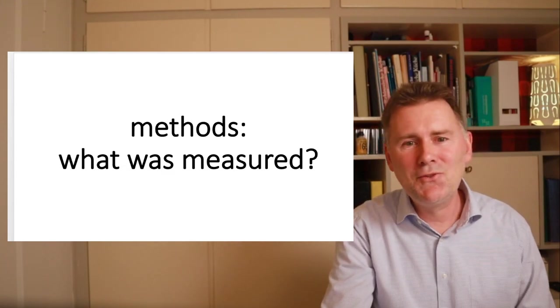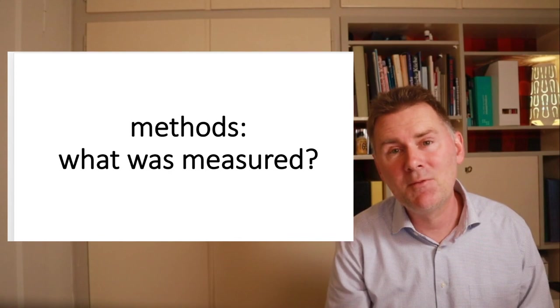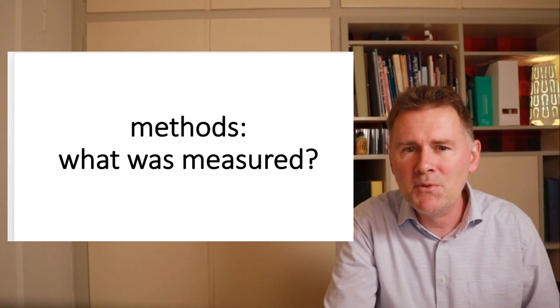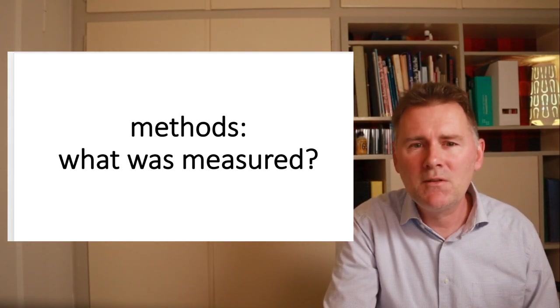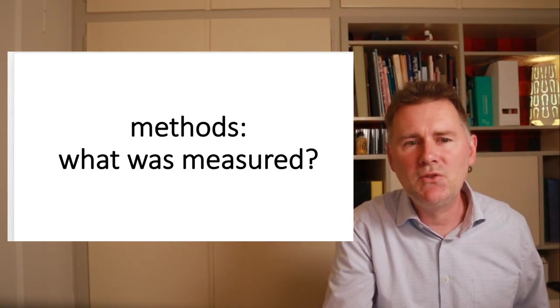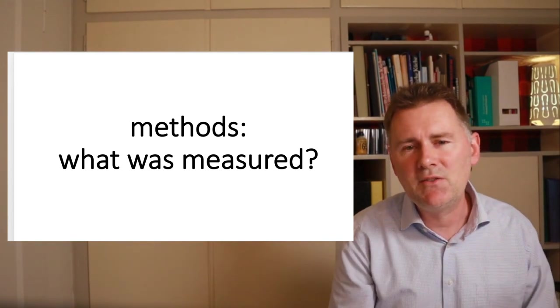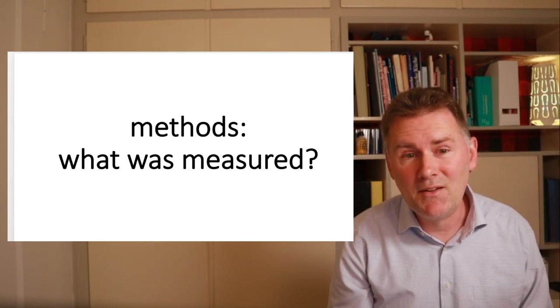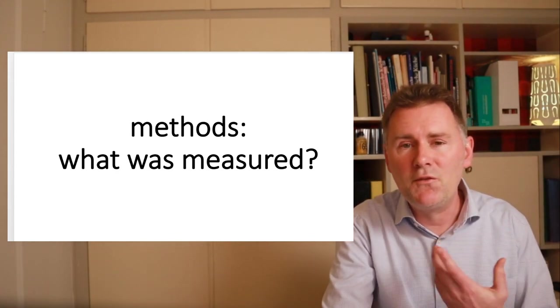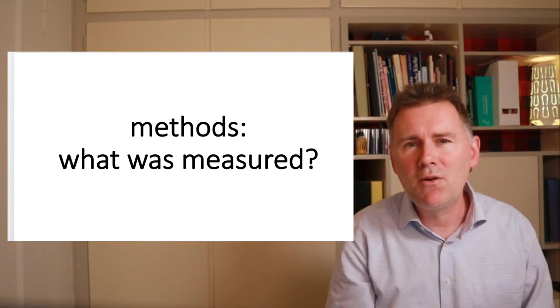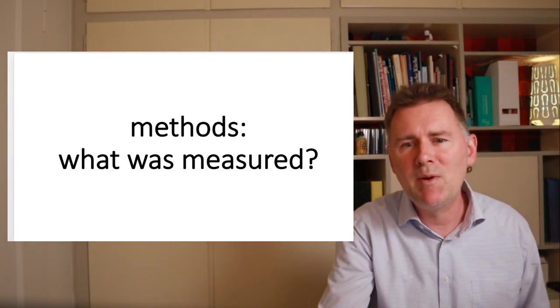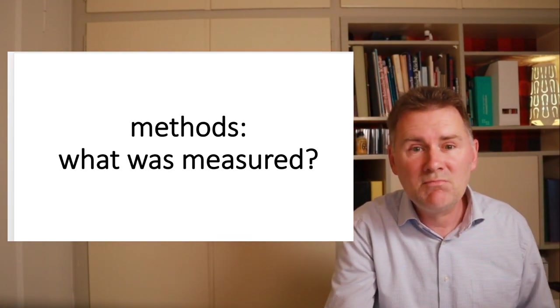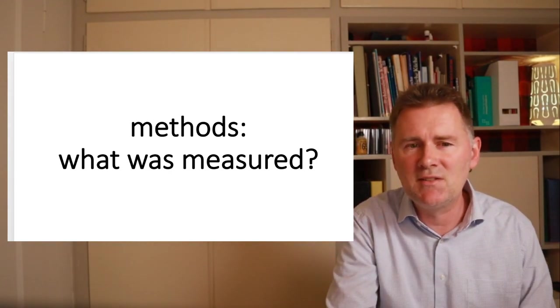Now, let's assume that you've made it safely to the second part, the methods section. Here, there might be a description of a corpus study or an experiment or any kind of research design that the authors use to answer their research question. Again, that sounds pretty straightforward, but it often isn't. The method that the researchers use may be unfamiliar to you. The description of an experiment may be very dense and there may be terms that are completely new to you. It can be a challenge to work through that, trying to understand what exactly the researchers did.